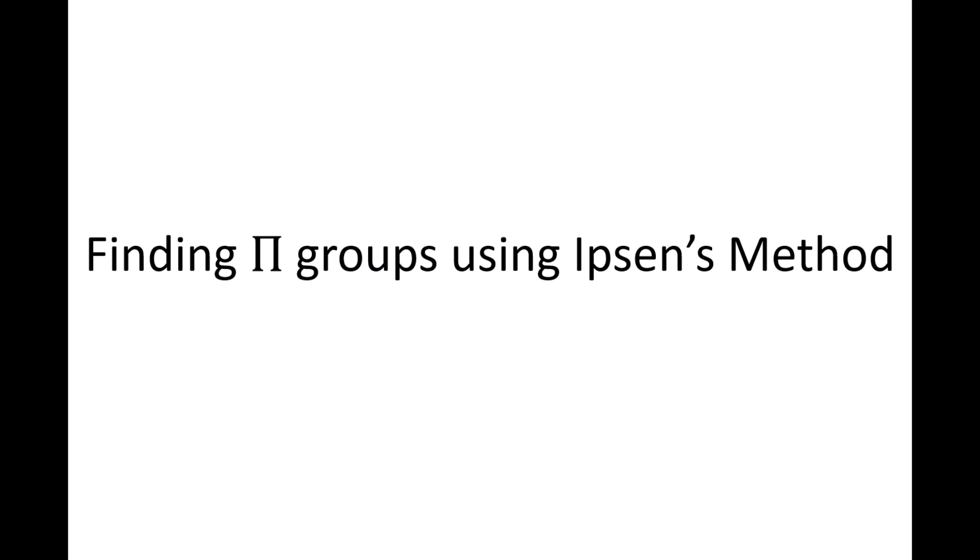In this lesson, we will discuss how to find pi groups using Ibsen's method for dimensional analysis problems. In previous videos, we discussed how to find a valid set of pi groups using the method of repeating variables. An alternative method for finding a valid set of pi groups is Ibsen's method, which can be broken down into four steps.